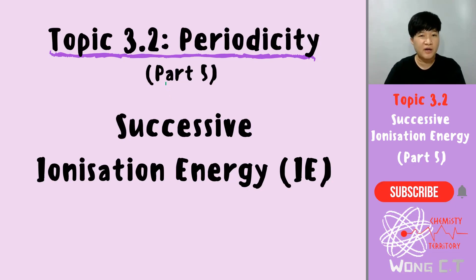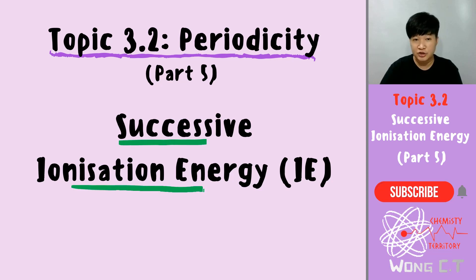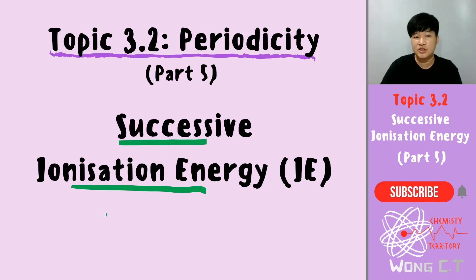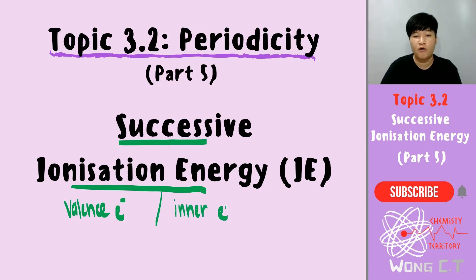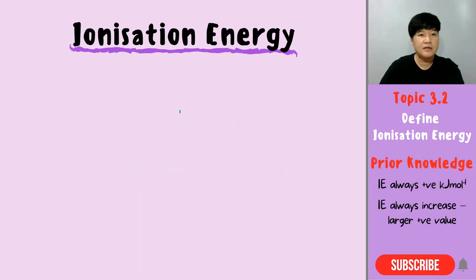Hi guys, welcome back to Born Chemistry. For this video, we discuss about successive ionization energy and we are going to use the information from the successive ionization energy to find the valence electron of an element and also the inner electron of an element. First and foremost, let's recall a bit about what is ionization energy.